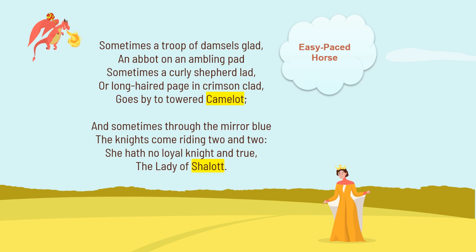There are other images seen by the Lady of Shalott: sometimes a troop of damsels — meaning girls — an abbot on an ambling pad, which is an easy-paced horse, sometimes a curly shepherd lad or a long-haired page in crimson clad — clad meaning wearing something in crimson — going by to towered Camelot. And sometimes through the mirror blue the knights come riding two and two. She has no loyal knight and true, the Lady of Shalott. It was customary in the Middle Ages and in courtly tradition that knights were loyal to a lady — not necessarily in the form of love, but they showed loyalty and honor toward that lady.